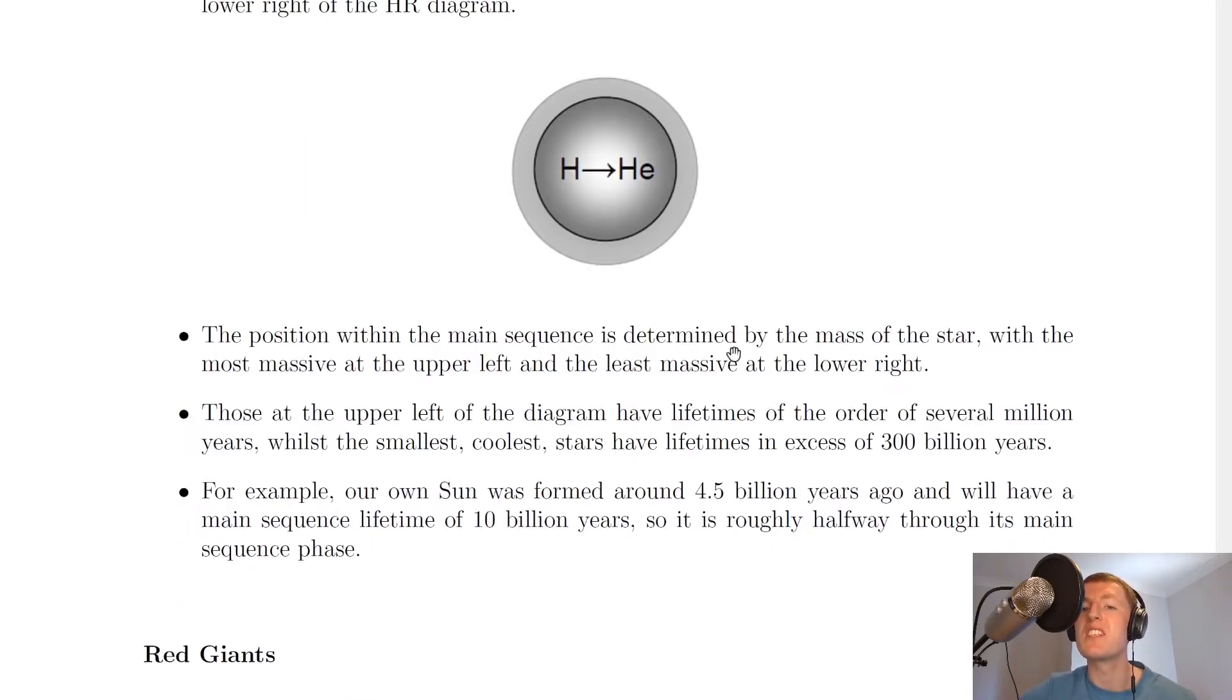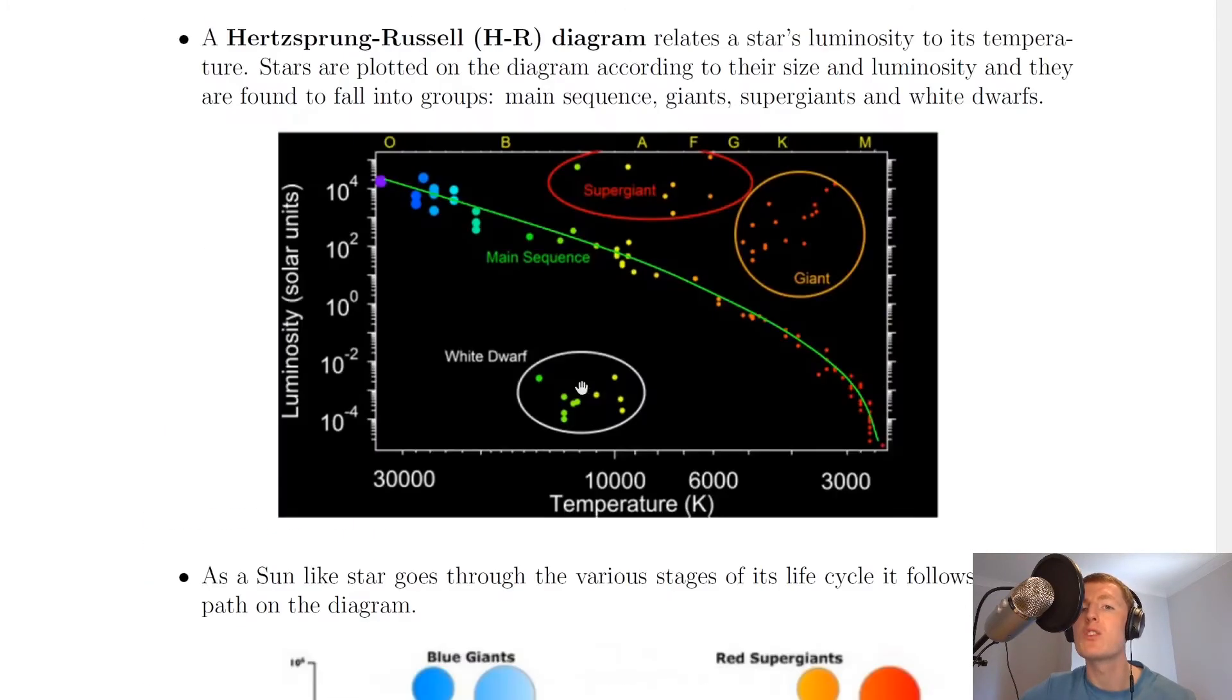The position within the main sequence is determined by the mass of the star, with the most massive at the upper left and the least massive at the lower right. If we look back at the diagram, we've got the most massive stars over here and the least massive towards the lower right.